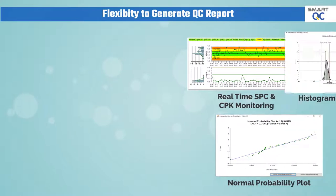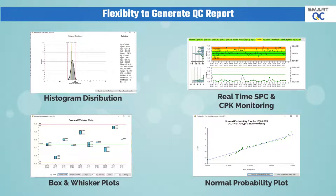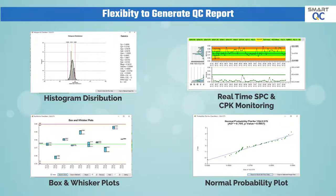Smart QC has the flexibility to compile and generate various QC reports according to customer-given formats. The user can perform the required report configuration through short training. Furthermore, there are powerful analysis tools such as process histogram, process box plot, probability plot, and online CPK monitoring.